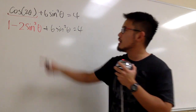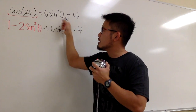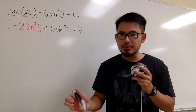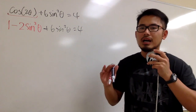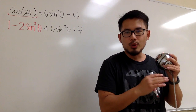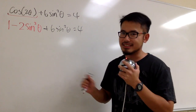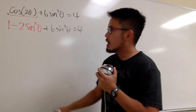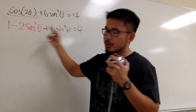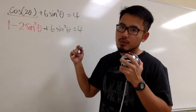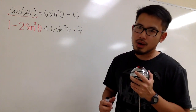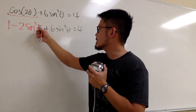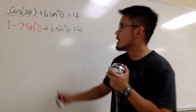Keep in mind: all the angles have to be the same. And then ideally speaking, we want to have either all sines or all cosines. To solve a trig equation, we want to isolate the sine or cosine part. Here we only have the sine squared theta, so let's try to isolate that.